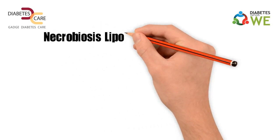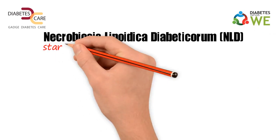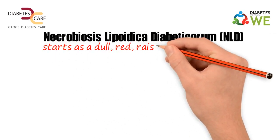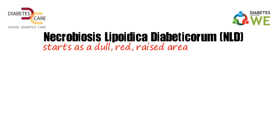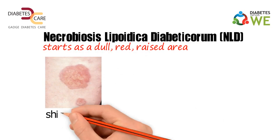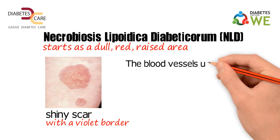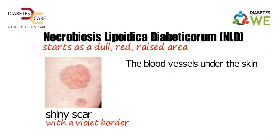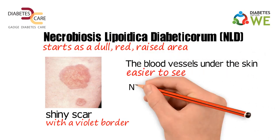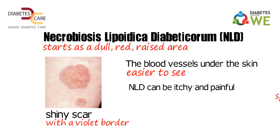Necrobiosis lipoidica diabeticorum (NLD) often starts as a dull, red, raised area. After a while, it looks like a shiny scar with a violet border. The blood vessels under the skin may become easier to see. NLD can be itchy and painful, and sometimes the spots crack open.